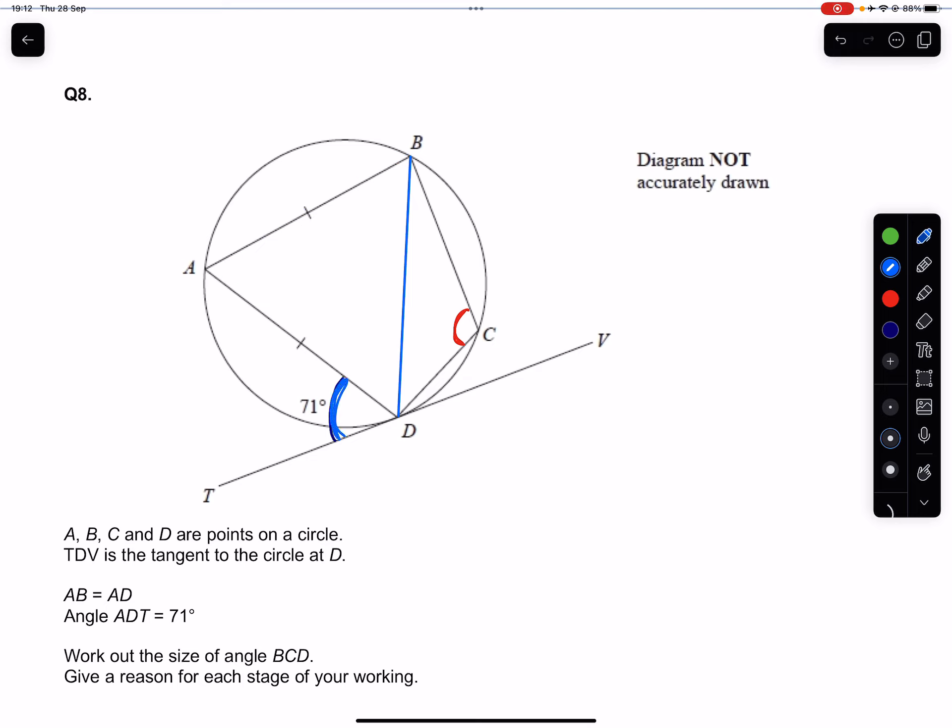Creating this triangle, and then we can use the alternate segment theorem where this 71 degrees here and this angle ABD here will be equal.